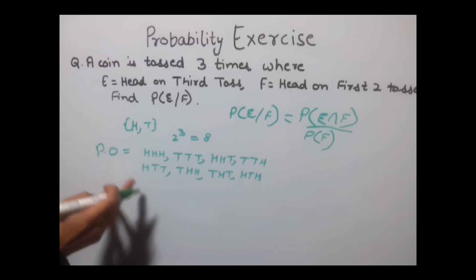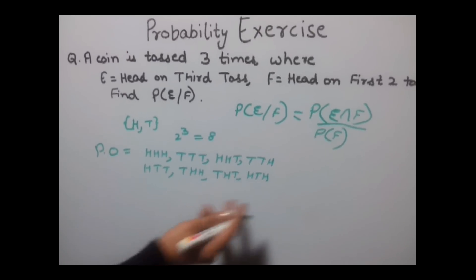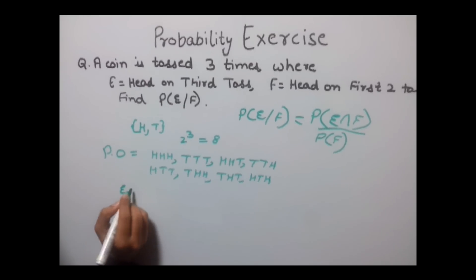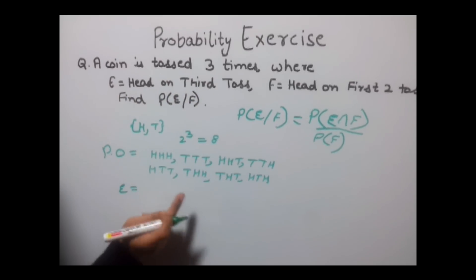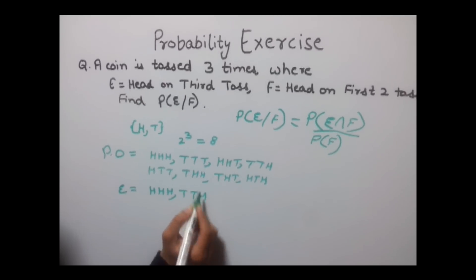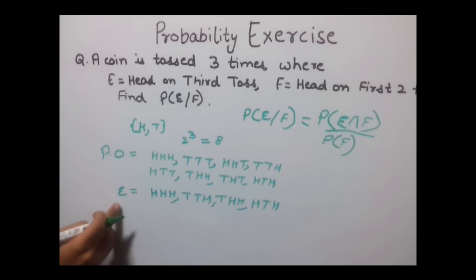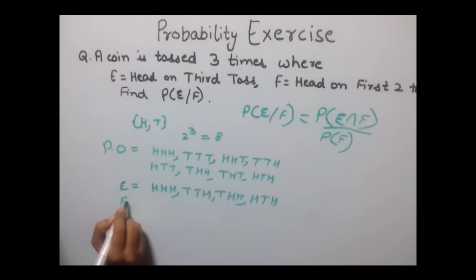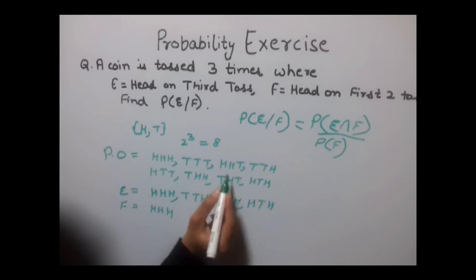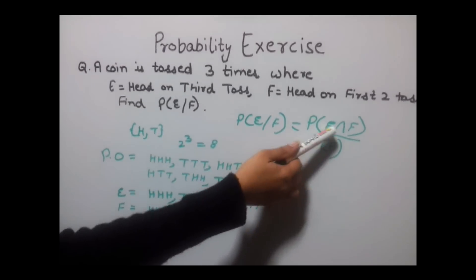We need to find the probability of E given F. The outcomes of event E — head on the third toss — are: HHH, TTH, THH, and HTH. The outcomes of event F — head on the first two tosses — are: HHH and HHT. There are no other outcomes for F.